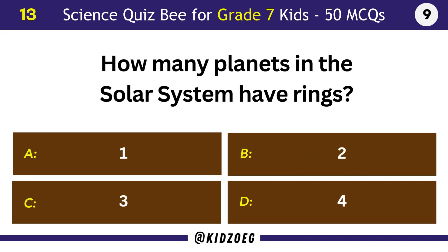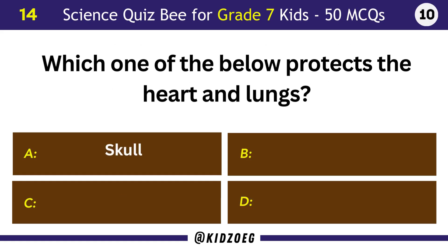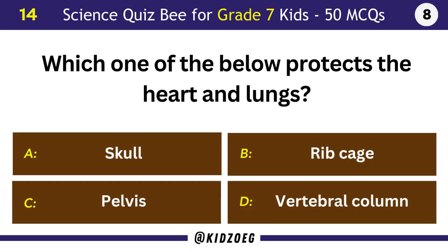How many planets in the solar system have rings? Four. Which one of the below protects the heart and lungs? Ribcage.